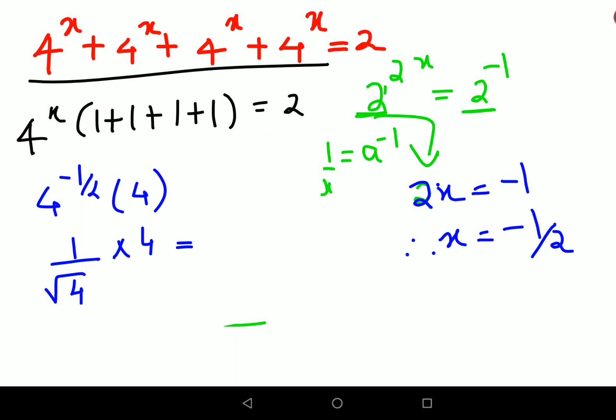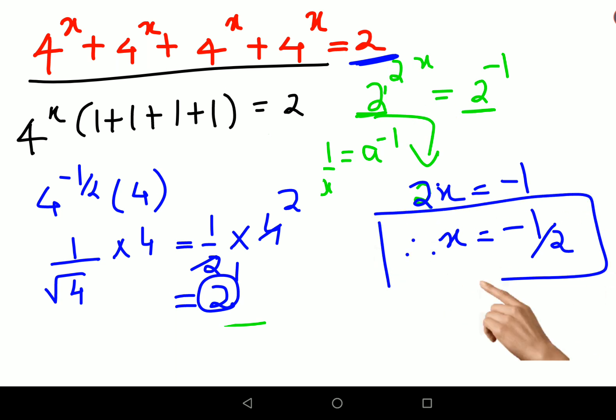So this 1 upon root 4 is nothing but 1 upon 2 into 4. This is getting cancelled and you get the value of 2. So therefore you get the answer as 2 and that is your RHS. So therefore I can say value of x is nothing but just minus 1 upon 2.